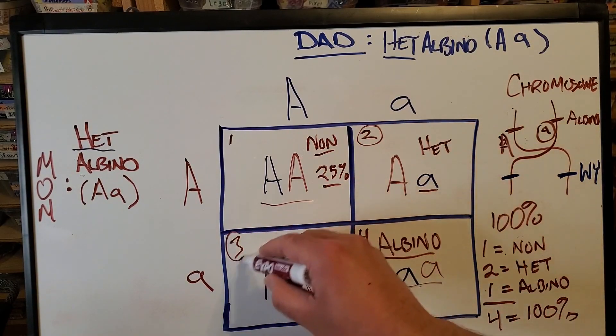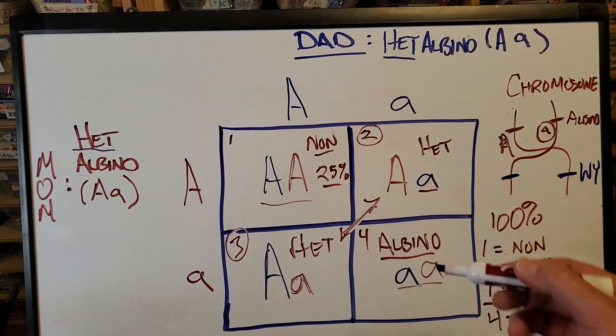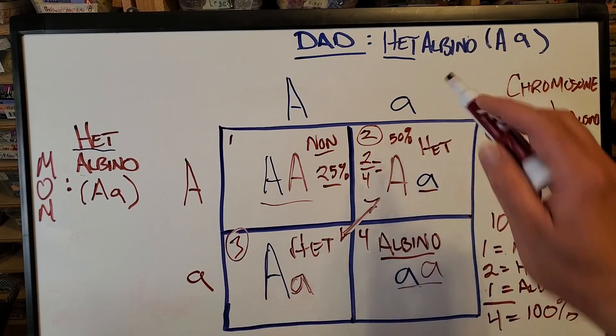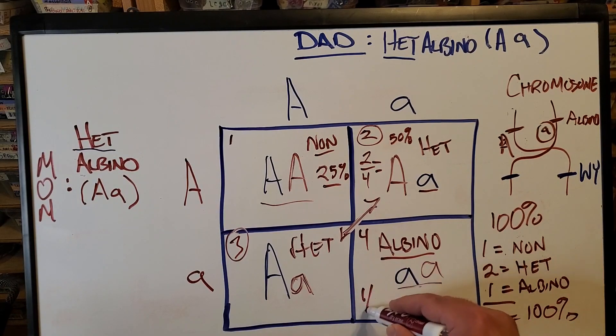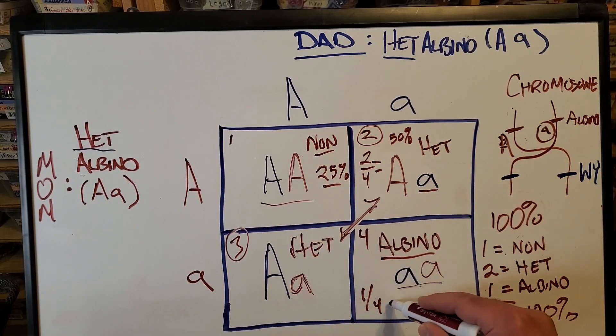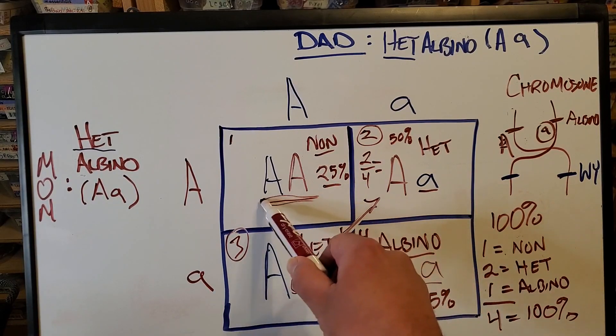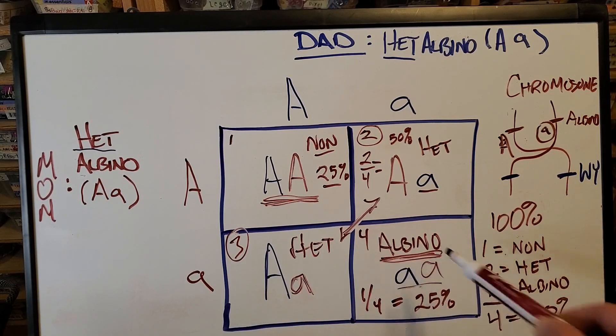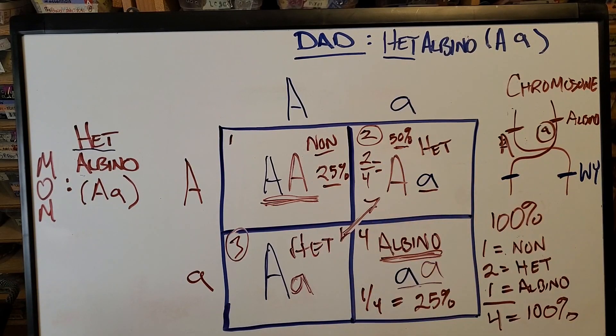Here, you actually have two chances to hit either one of these, which you would think would be 50%. Because if you have two chances out of four, that equals 50%. So let's just leave it that way for now. Then we're going to come back. And this one as well, you have one chance to hit lowercase a, lowercase a, out of four opportunities. And that's going to be 25% again. So you have a 25% chance to hit a gecko that is not carrying any albino gene. You have a 25% chance to actually hit a visual albino. And you have a 50% chance to hit a het albino animal.